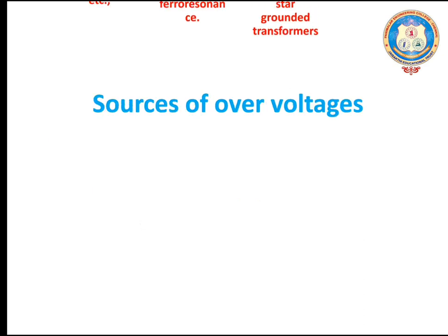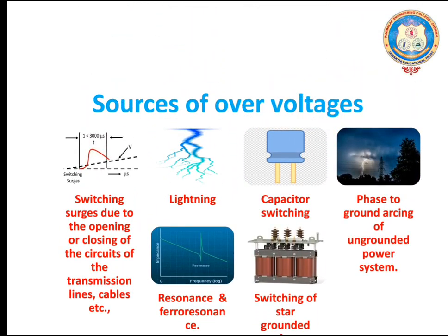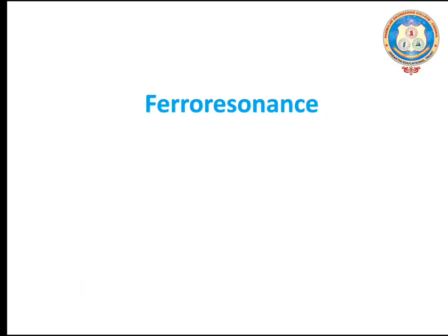What are the sources of over-voltage? Switching surges due to the opening and closing of the circuit breakers, lightning, capacitor switching, phase to ground arcing, resonance and ferro-resonance, and switching of star-grounded transformers.